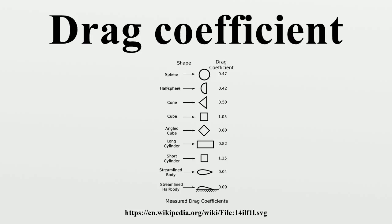Flow patterns and therefore C_D for some shapes can change with the Reynolds number and the roughness of the surfaces. In general, C_D is not an absolute constant for a given body shape — it varies with the speed of airflow. A smooth sphere, for example, has a C_D that varies from high values for laminar flow to 0.47 for turbulent flow. Although the drag coefficient decreases with increasing Reynolds number, the drag force increases. Aircraft use their wing area as the reference area when computing C_D, while automobiles use frontal cross-sectional area; thus, coefficients are not directly comparable between these classes of vehicles. In the aerospace industry, the drag coefficient is sometimes expressed in drag counts, where one drag count equals 0.0001.